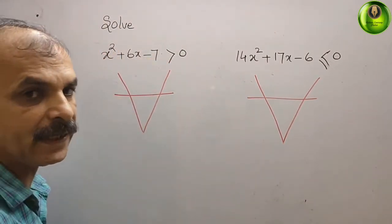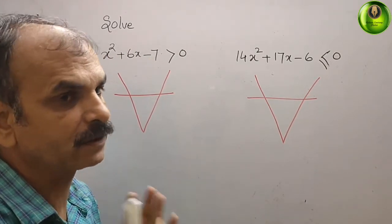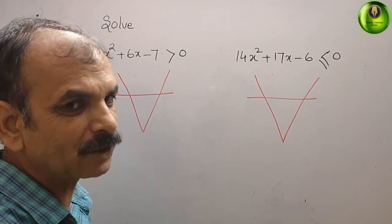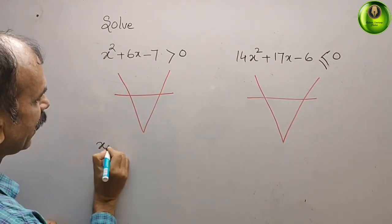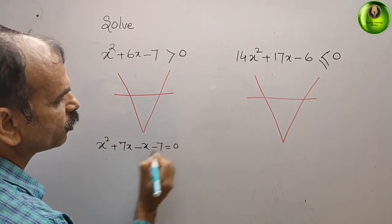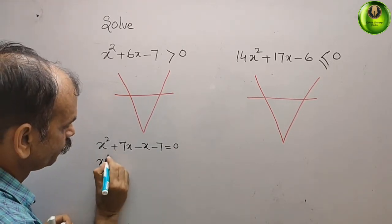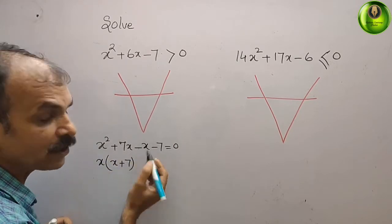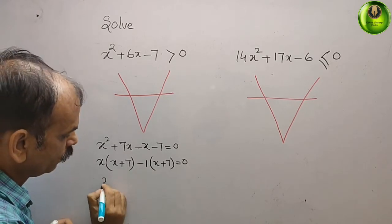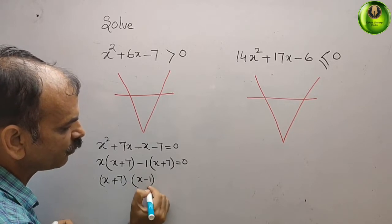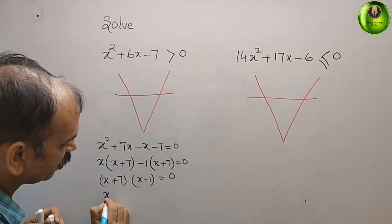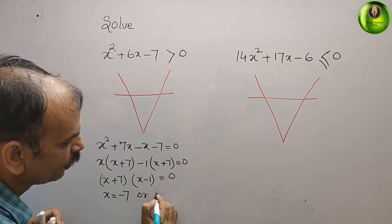Now solve the first equation by replacing the inequality with an equal sign. For x² + 6x - 7 = 0, we split the middle term: -7 × 1 = -7, and 7 - 1 = 6. So we write x² + 7x - x - 7 = 0, giving x(x + 7) - 1(x + 7) = 0. The factors are (x + 7)(x - 1) = 0, so x = -7 or x = 1.